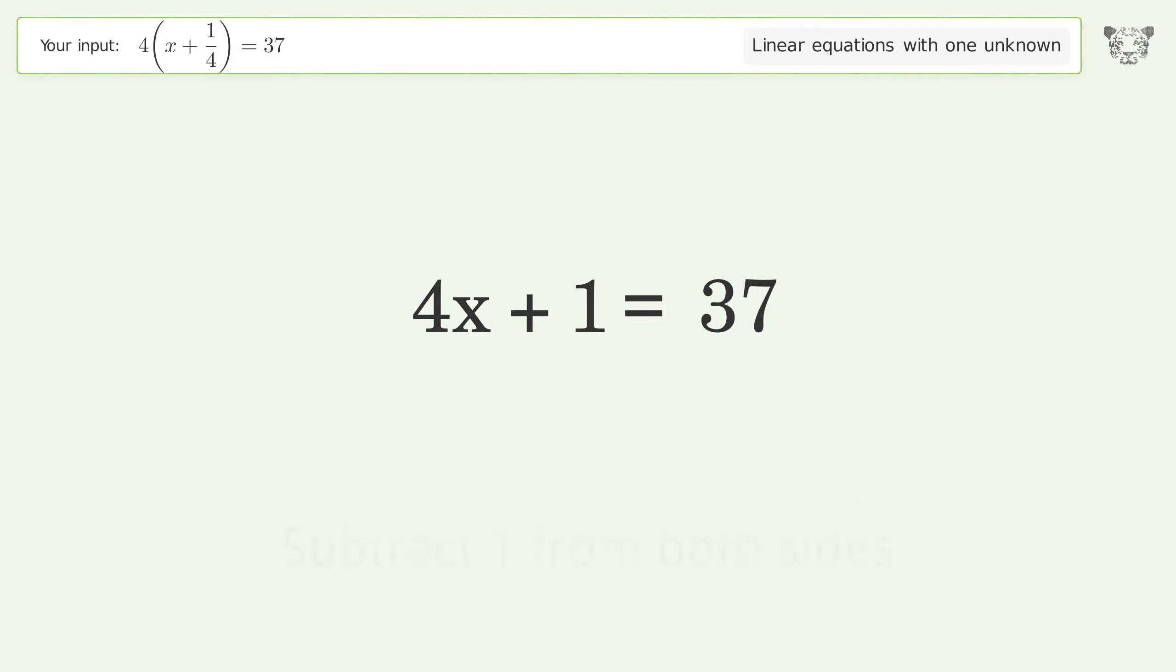Of the equation, subtract one from both sides, simplify the arithmetic. Isolate the x, divide both sides by 4.